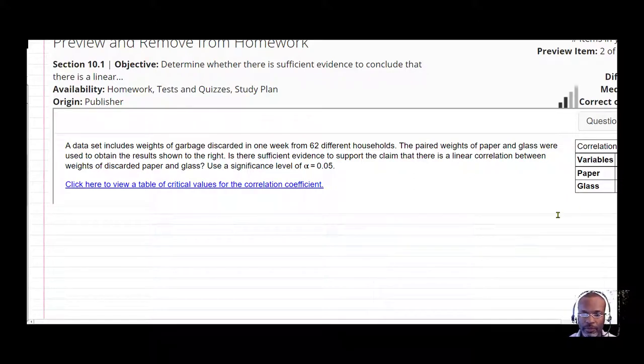So for this problem, the setup is that there were 62 different households that were visited: 1, 2, 3, 4, 5, 6, dot dot dot, all the way down to 62.